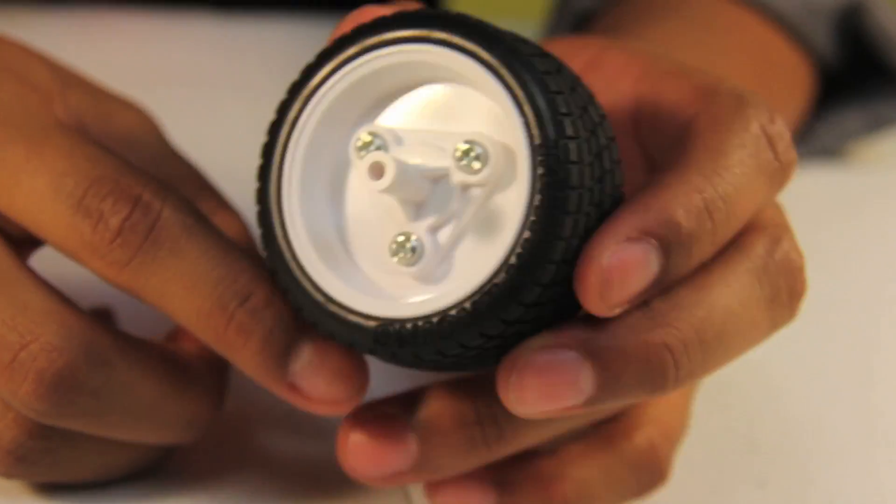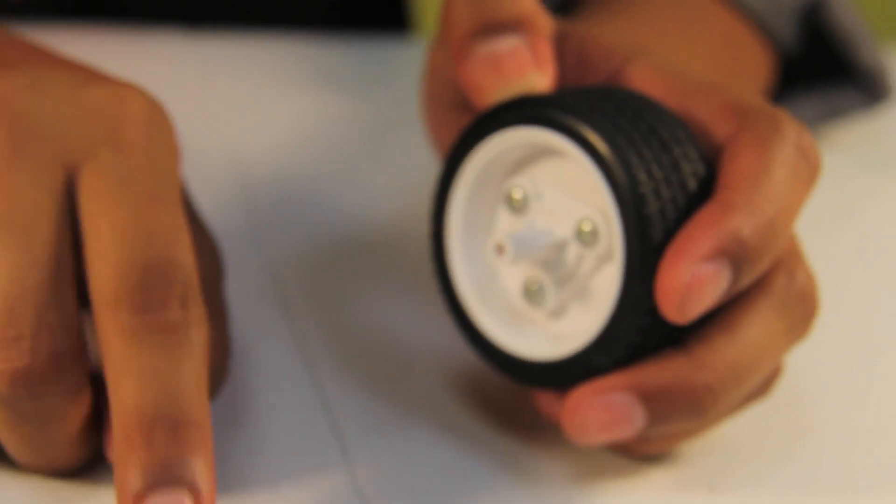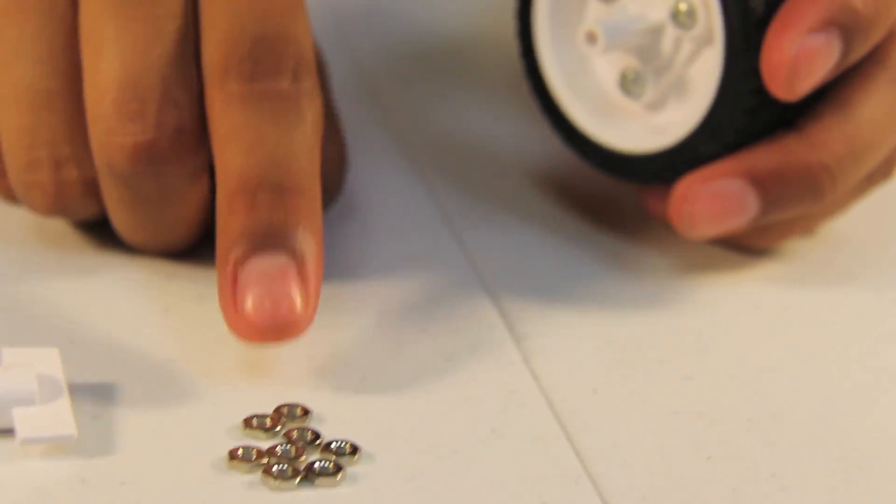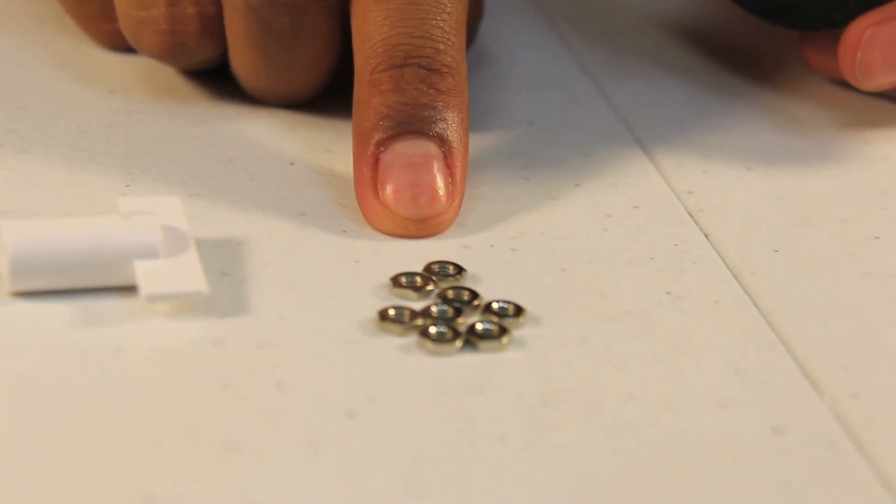Do this to the other side. You may have some extra nuts. You can go ahead and put those back in a bag and use them in the future, as well as your tool. Now that you've finished assembling your tires, you'll be able to connect this to your chassis in the following videos. Congratulations!